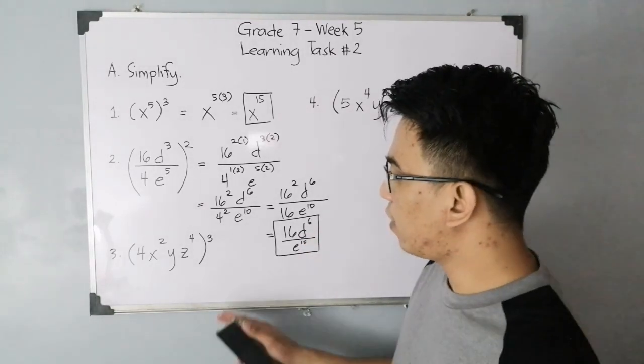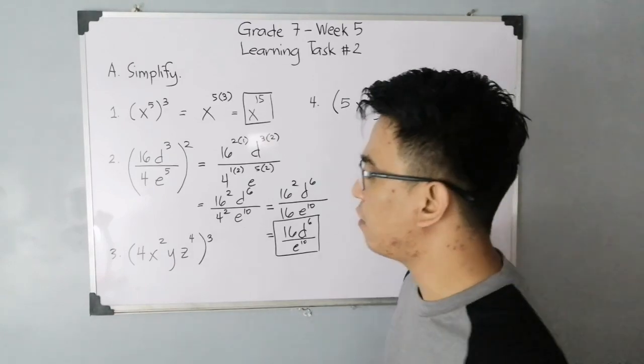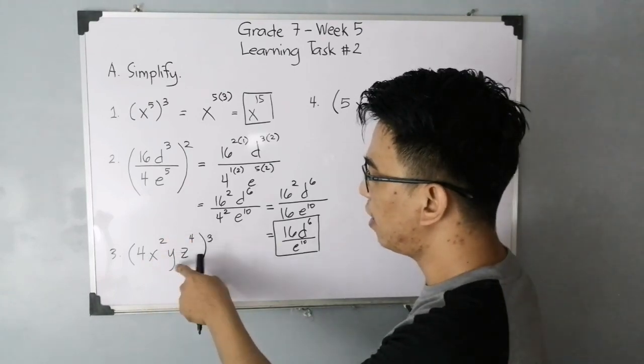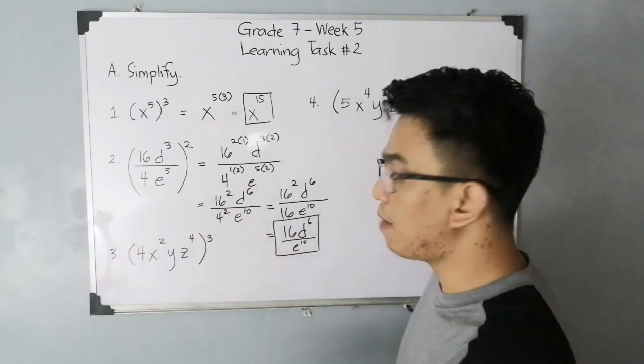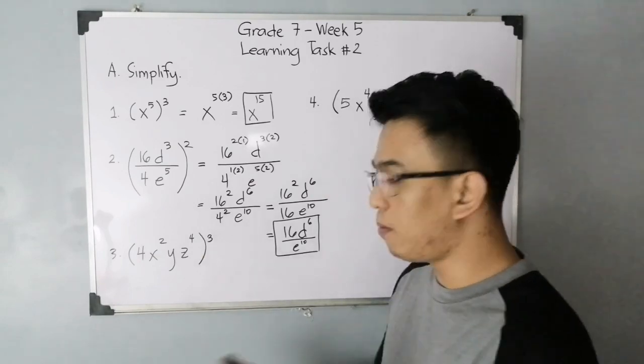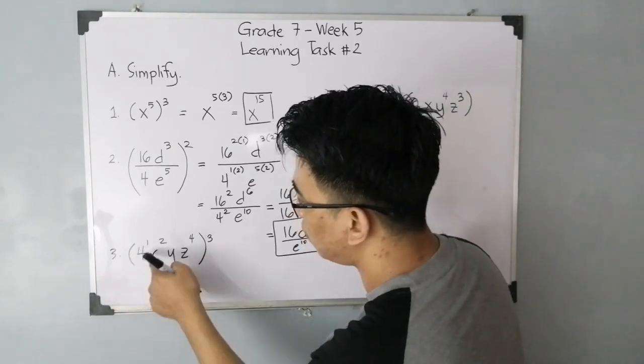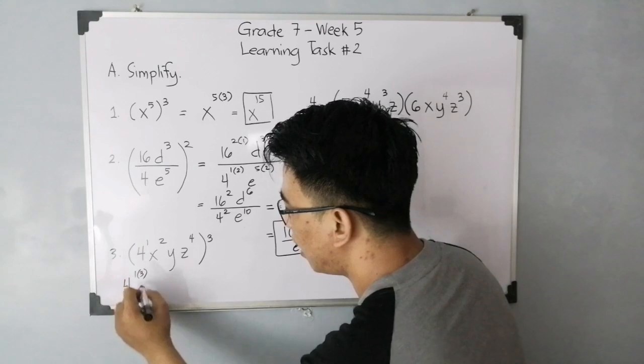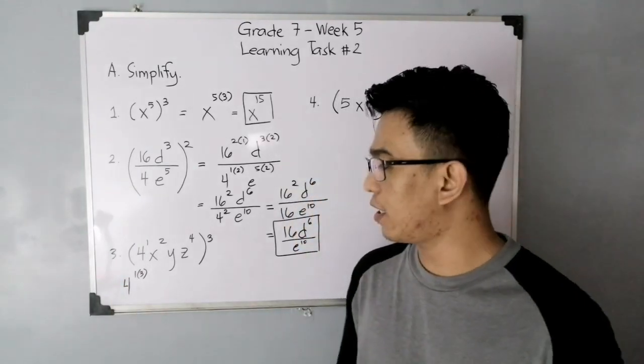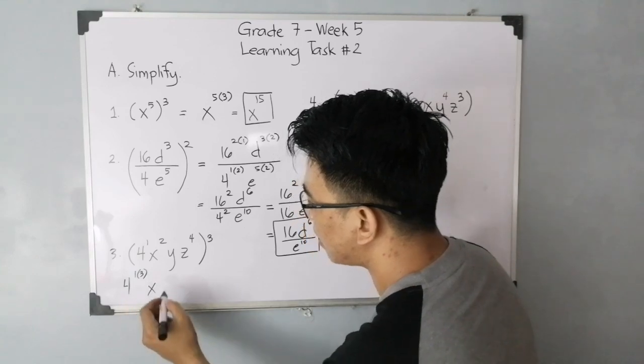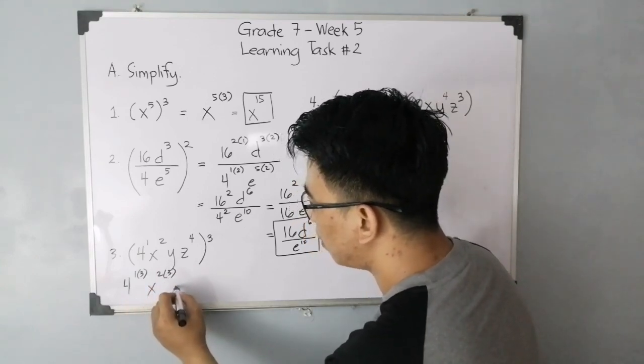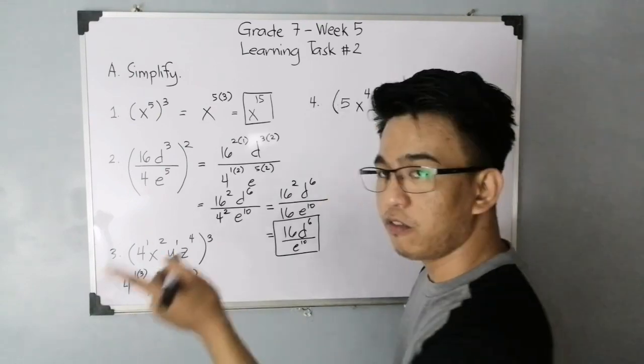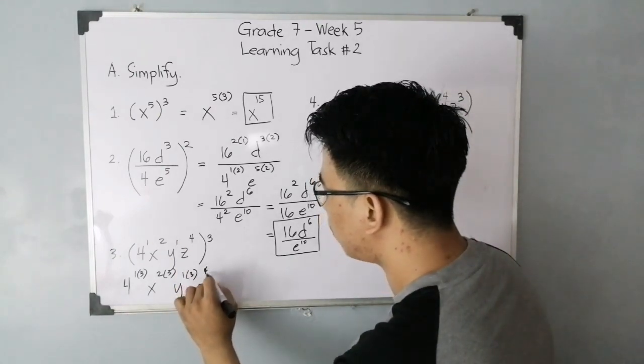Let's move on with item number 3. This is also power rule, but it's not in fractional form. You have the quantity of 4 x raised to 2 y raised to y z raised to 4, raised to 3. Again, power rule, wherein you need to distribute the exponent and multiply it. For the first base, which is 4, it has an original exponent of 1. So that is 4 raised to 1 times 3. When we say power rule, just multiply the exponent. For the variable x, you have x raised to 2 times 3, and then y originally has an exponent of invisible 1, you have 1 times 3. And then for the variable z, you have z raised to 4 times 3.